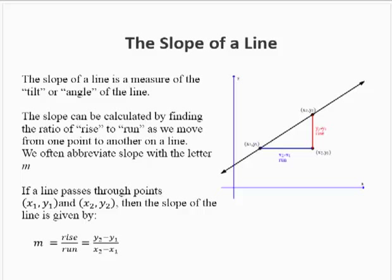The slope of a line is a measure of the tilt or angle of the line. The slope can be calculated by finding the ratio of rise to run as we move from one point to another on a line. We often abbreviate slope with the letter m.